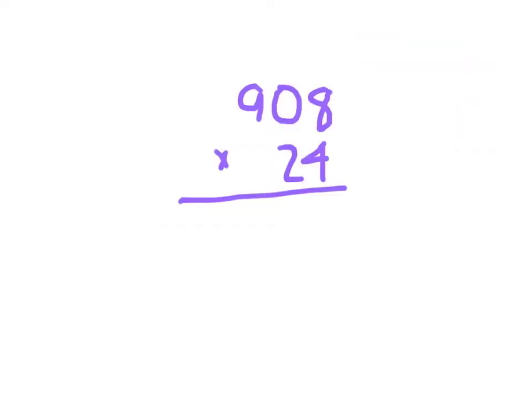Here we have 908 times 24. There's just going to be a few more steps with this problem here. We'll start by figuring out the product of 908 times 4. Step by step, 4 times 8, which is 32, place a 2, regroup that 3, right into that 10's place.